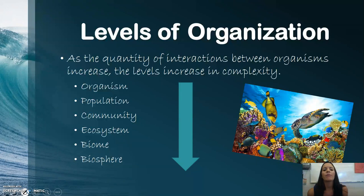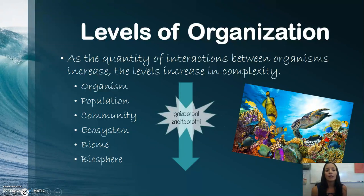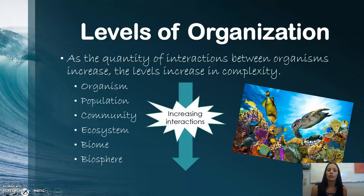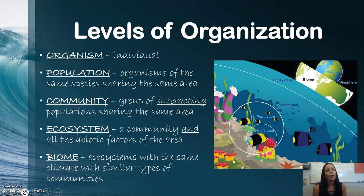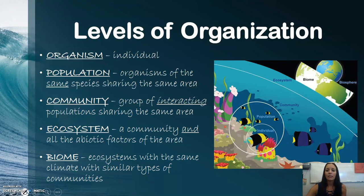In an ecosystem there are interactions. We start very small with just simply an organism, and as we travel to a biosphere you also have an increase in complexity. Those increasing interactions happen more frequently the larger your area is. An organism is just simply an individual. A population is a group of those individuals. A community is a group of different populations. Ecosystems are where non-living factors come into play as well, and a biome is ecosystems with the same climate.